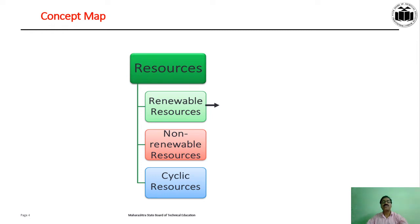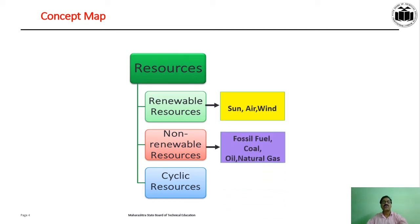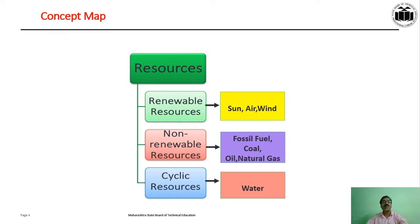Examples of renewable resources are water, sun, air, and wind. Examples of non-renewable resources are fossil fuel, coal, oil and natural gas. An example of a cyclic resource is water.